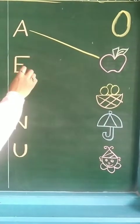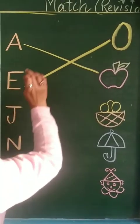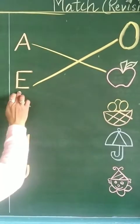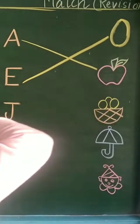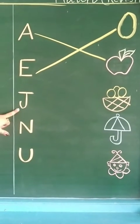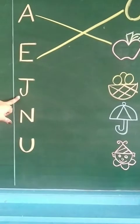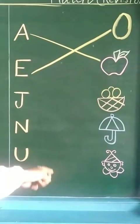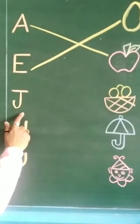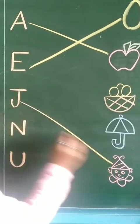Which letter is this? This is letter E. E for egg, so we are going to match letter E with the picture of E, that is egg. Now tell me which letter is this? This is letter J. Yes, J for joker.